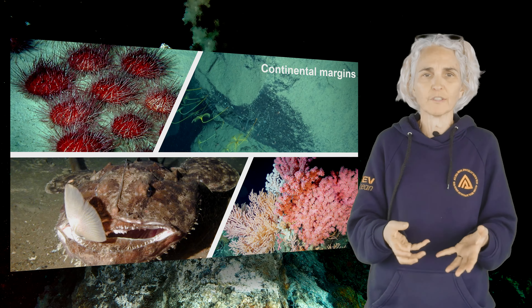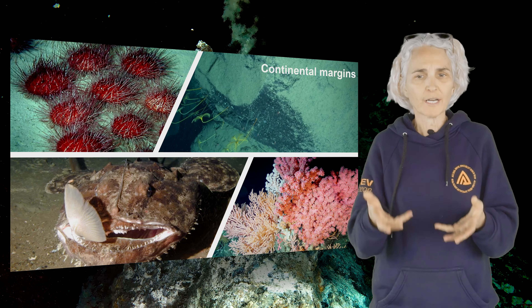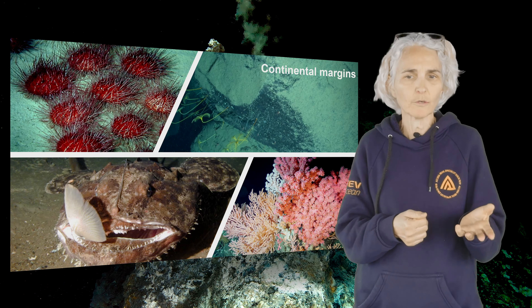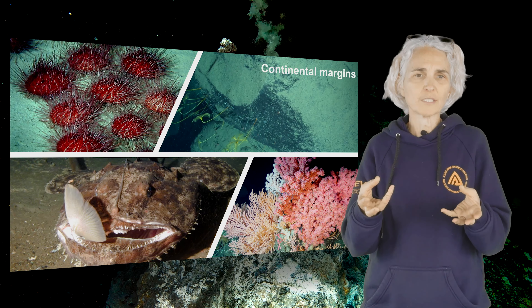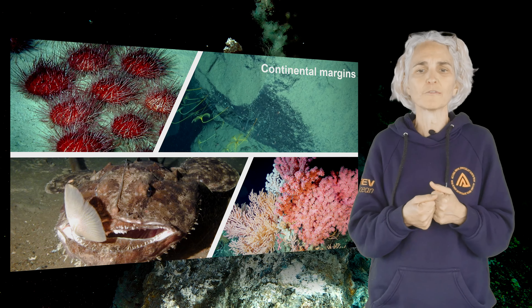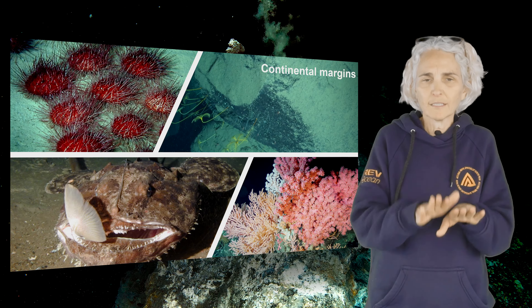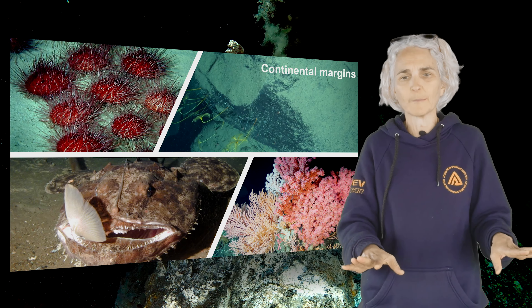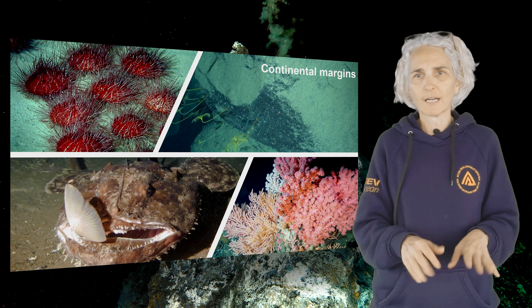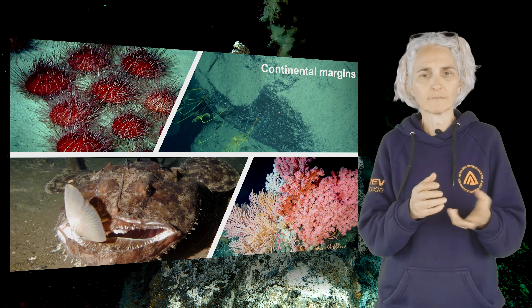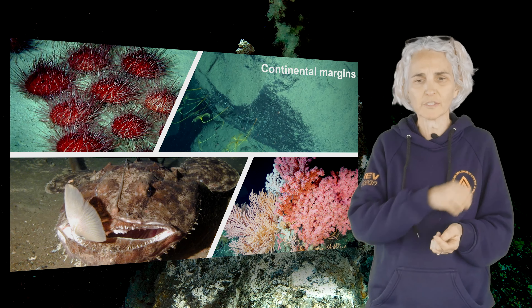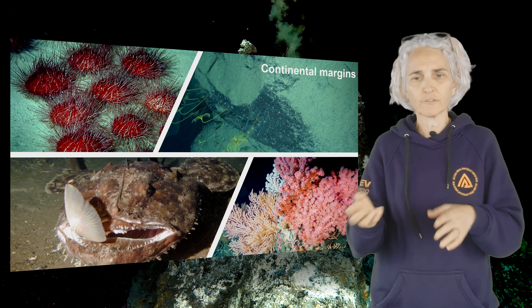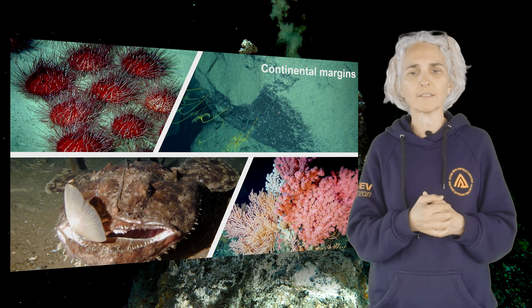On hard rock substrates — walls and rocky outcrops — you have filter feeders like corals, crinoids, and sponges using particles in the water column to feed. On the axis where it's mostly sedimented, you have deposit feeders like sea urchins and holothurians taking organic matter from the sediment, as well as predators feeding on the rest of the community.